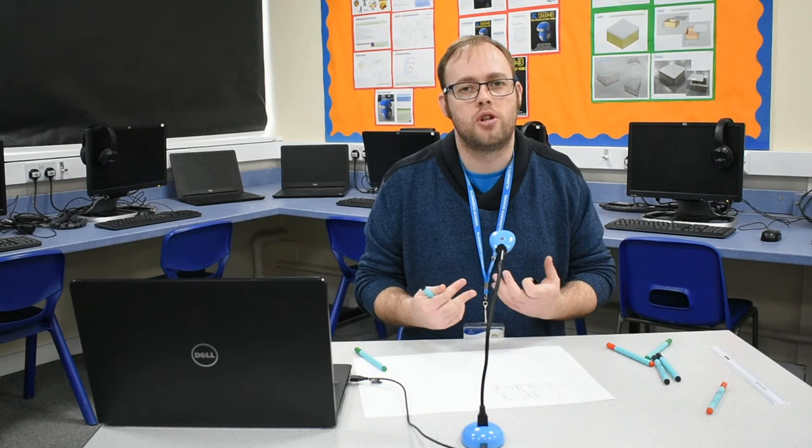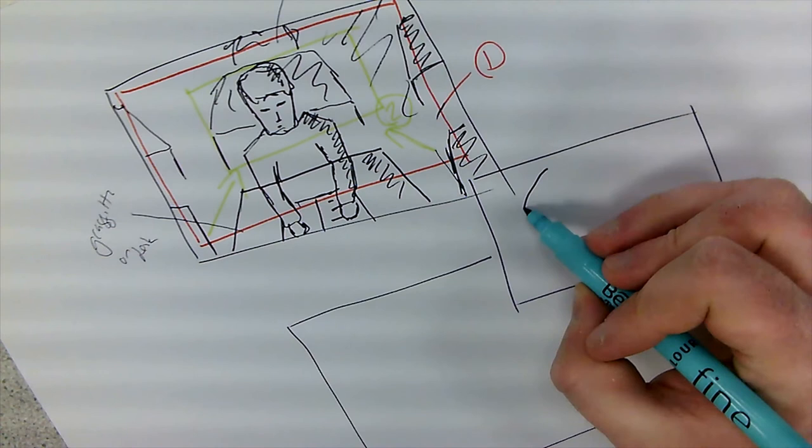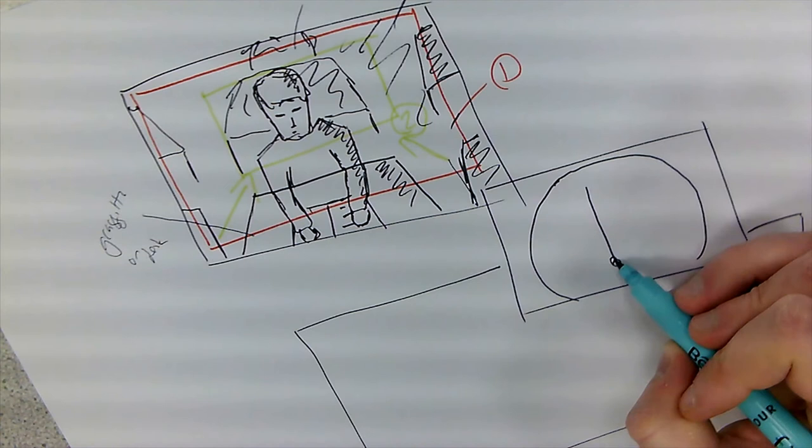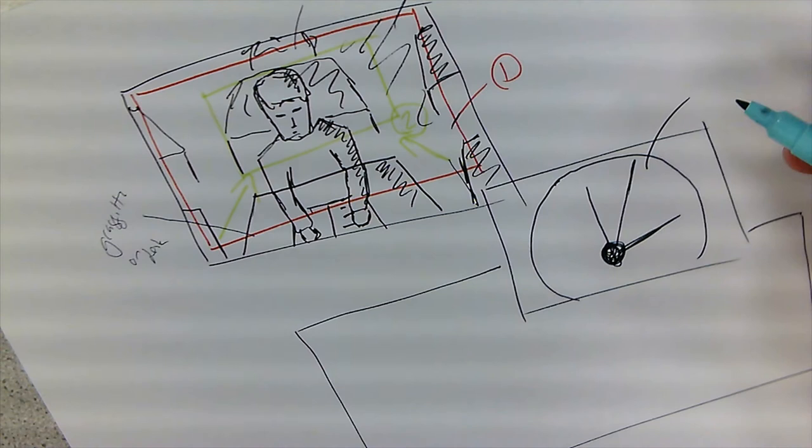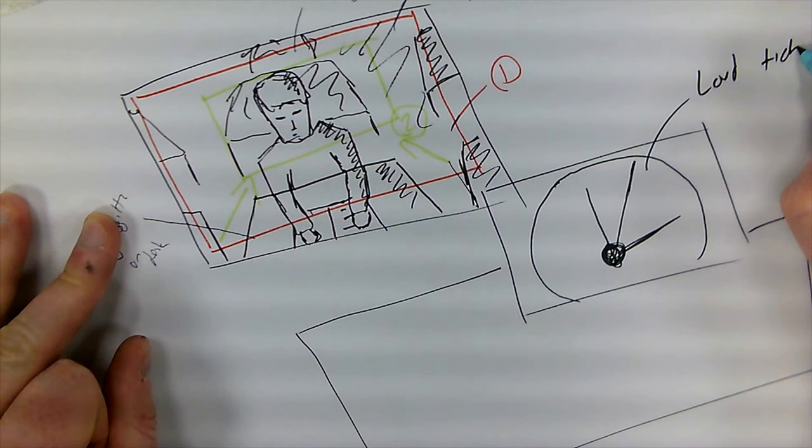Now for my transition scene, I'm going to cut to a clock. The clock is going to be in a bit of slow motion, maybe a bit exaggerated — but it's going to be a close-up of a clock, not even the whole clock, just really focusing on the second hand. And I'm going to annotate because I can't put music on a storyboard, but I'll write here: loud ticking, and intense.